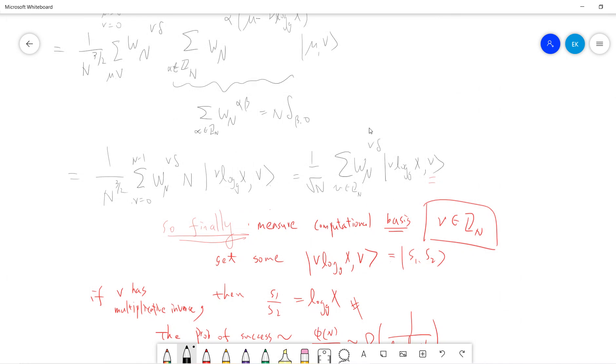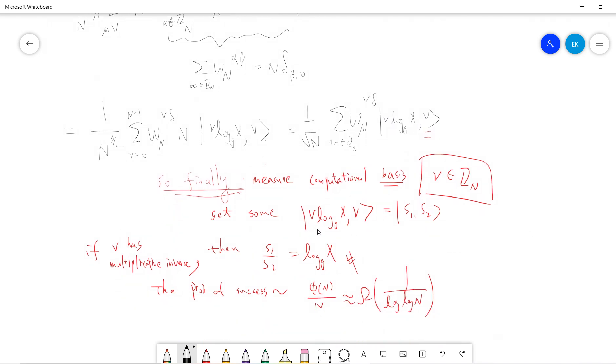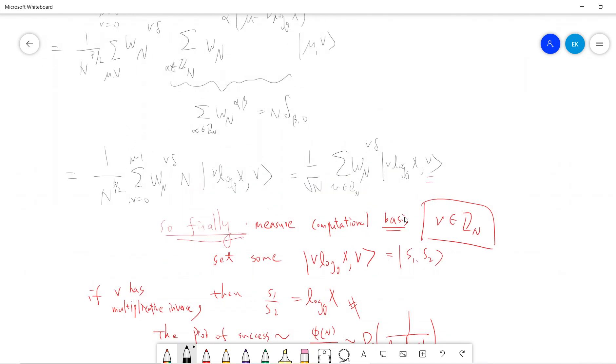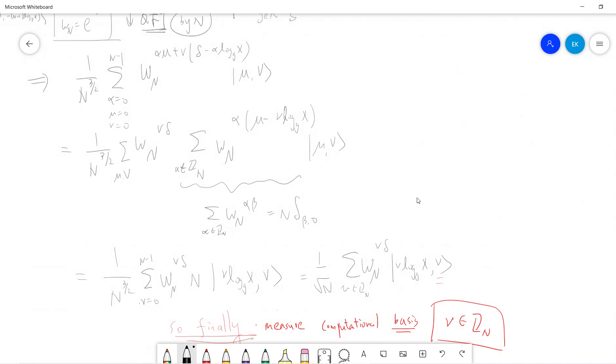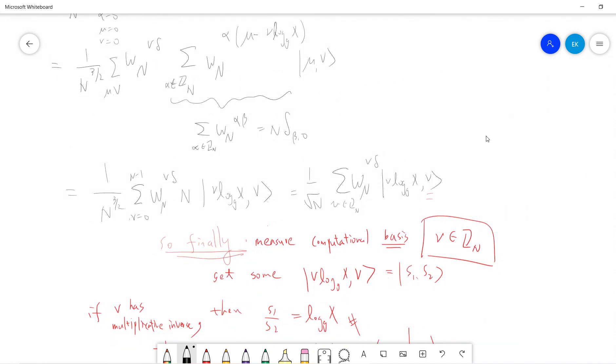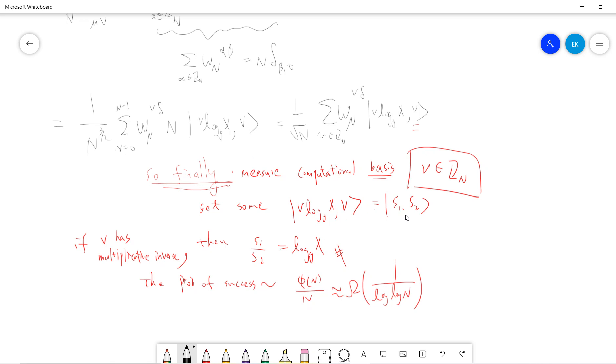Finally you can check my computation - you will get this. Then you measure in the computational basis for these two. You will get some number, two integers. Once you get these two integers, call it s_1 and s_2. I assume s_1 is non-zero. If s_1 is zero then just go back to the original process. You see s_1 is nu log_g x and s_2 is nu.